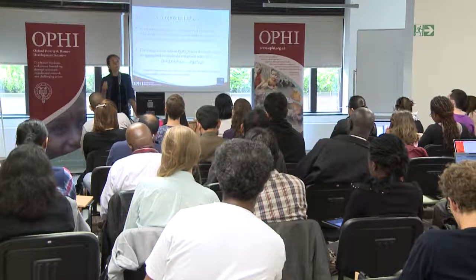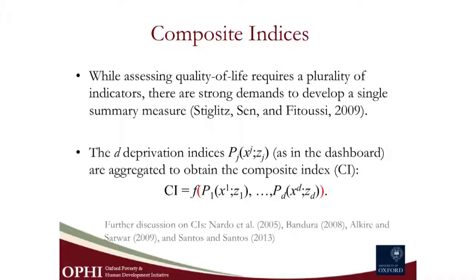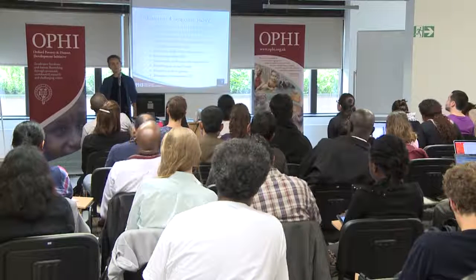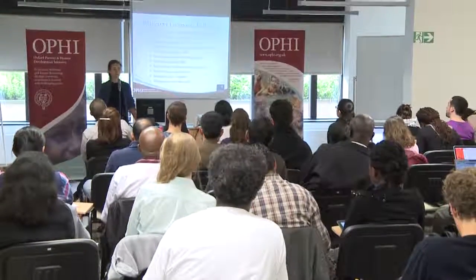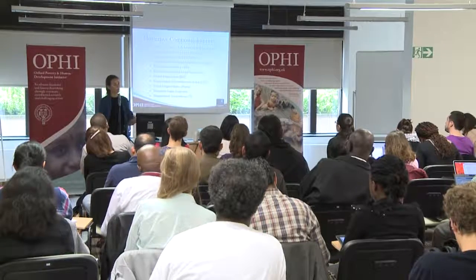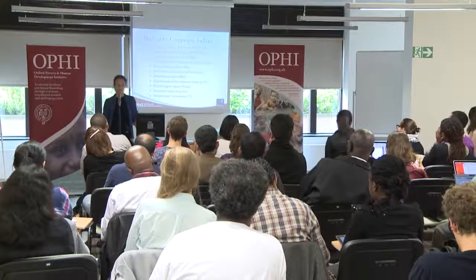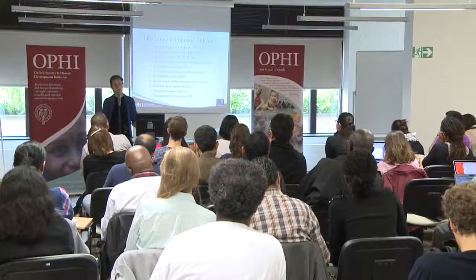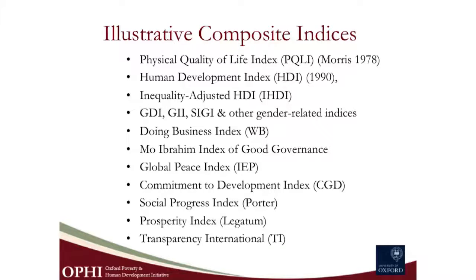The most common way of going beyond the dashboard is to build what we call a composite index. A composite index takes the marginal measures — the elements of the dashboard — and aggregates them. There are many examples: the PQLI by Morris in 1978, the Human Development Index, the Inequality-Adjusted HDI, the Gender Indices, the Doing Business Index, the Mo Ibrahim Index of Governance, the Global Peace Index, Commitment to Development, Social Progress, Prosperity, and Transparency International. They all use marginal measures or dashboard entries and aggregate across them. We discussed how the HDI summarizes life expectancy, income per capita, and average years of schooling.